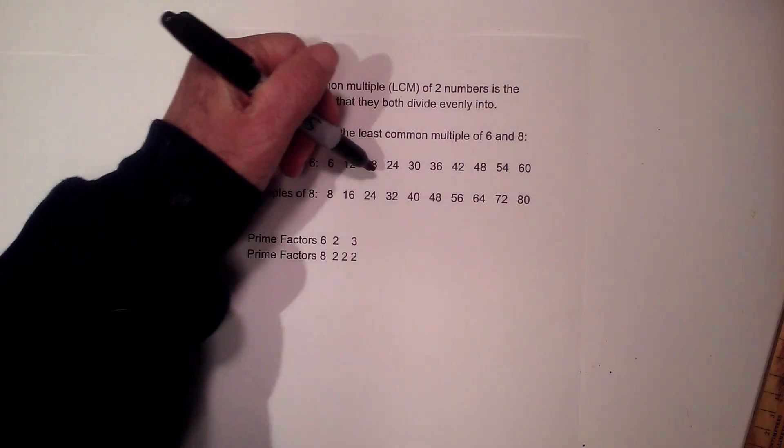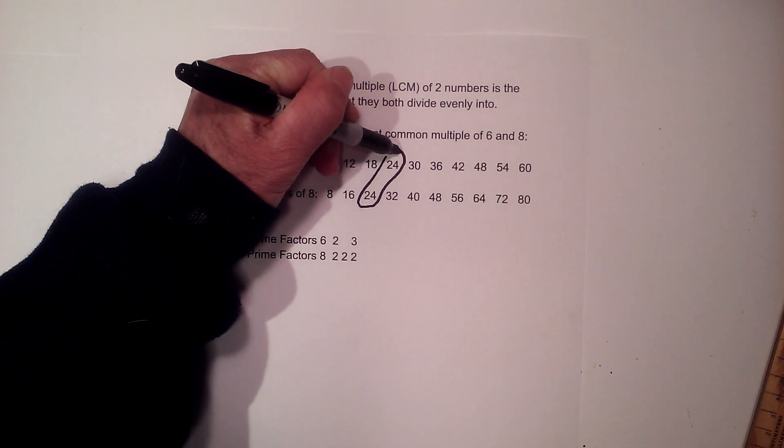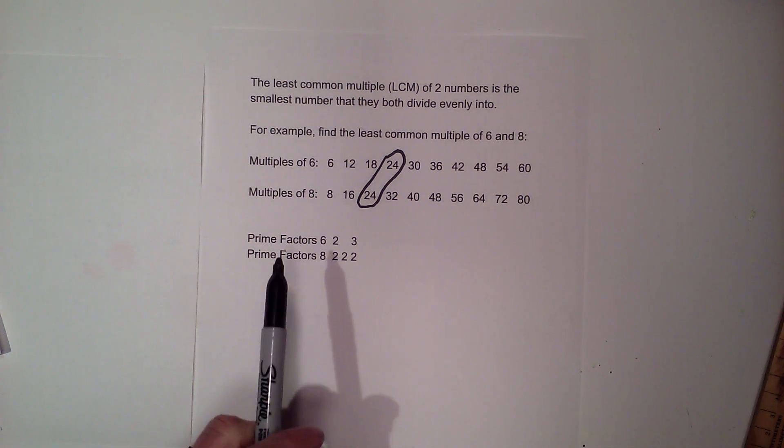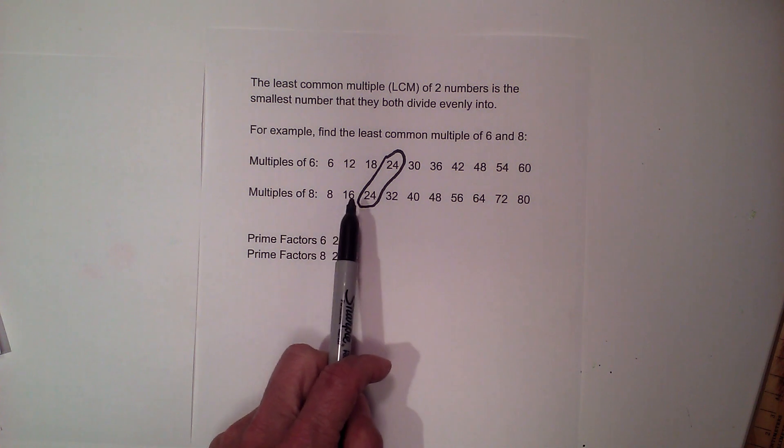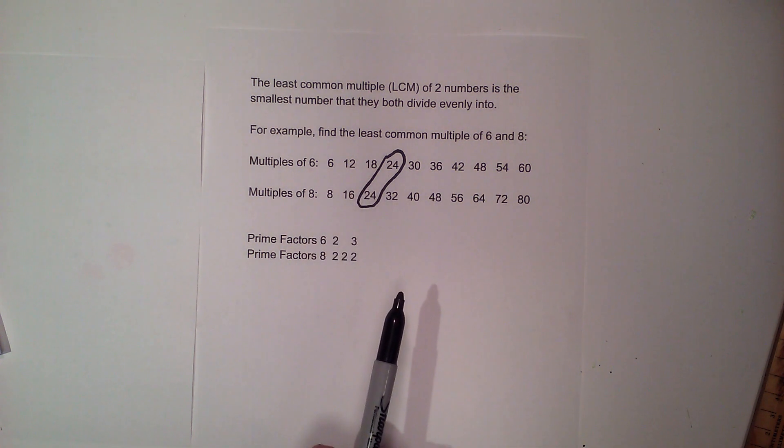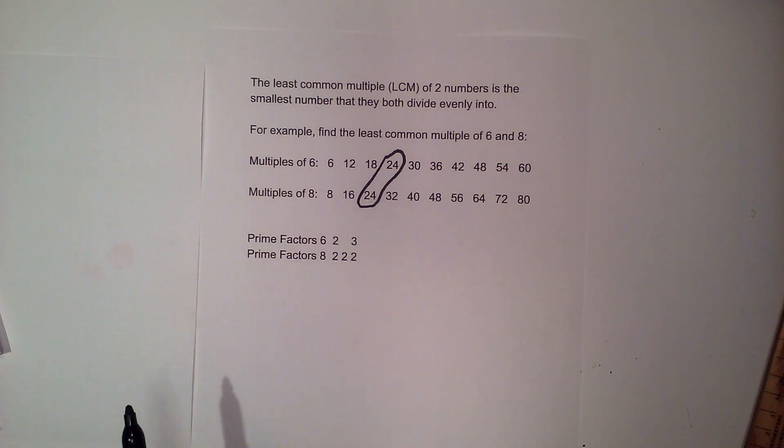Then what you do is you try to find the number that is found in both lists the first time, or the lowest of those. So the strength of this is that once you have the multiples written out, it's pretty easy. The weakness is you need to know your times table in writing these numbers out.